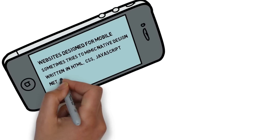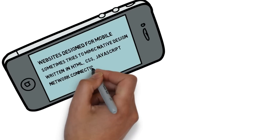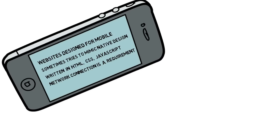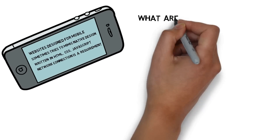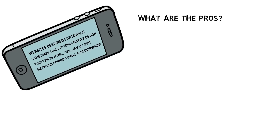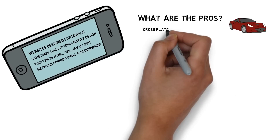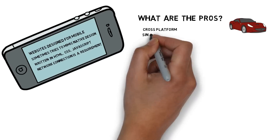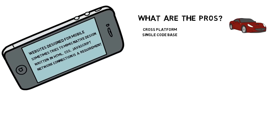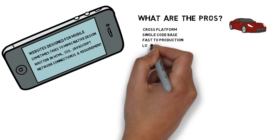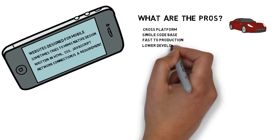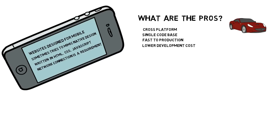A network connection is a requirement for a web app to work. What are the pros? It's cross-platform with a single code base. It has fast production and a lower development cost because of that single code base.